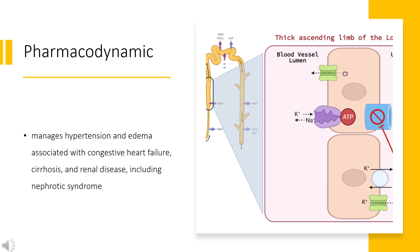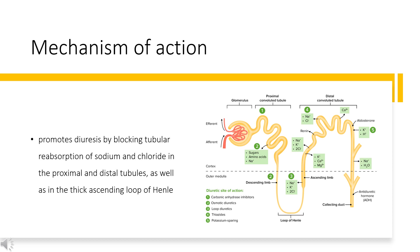Following intramuscular administration, the onset of action is somewhat delayed. Mechanism of Action: Furosemide promotes diuresis by blocking tubular reabsorption of sodium and chloride in the proximal and distal tubules, as well as in the thick ascending loop of Henle. This diuretic effect is achieved through the competitive inhibition of sodium-potassium-chloride co-transporters (NKCC2) expressed along these tubules in the nephron, preventing the transport of sodium ions from the luminal side into the basolateral side for reabsorption.